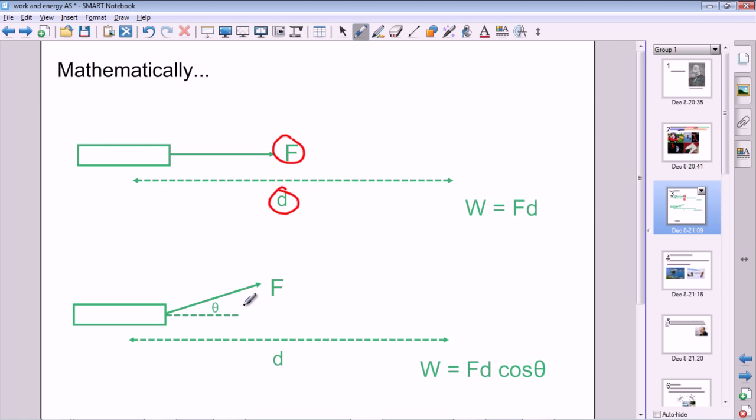Over here we've got the force which is acting at an angle theta to the distance being moved, and so what we actually have to do is to resolve this force F down onto the horizontal direction, the direction parallel to the direction of motion. So effectively we want this component of the force, which is, if you remember from your work on vectors, F times the cosine of theta. So effectively what we end up with is work equals force times distance times the cosine of theta. The more general equation is this one at the bottom: work equals force times the distance moved times the cosine of the angle between them.